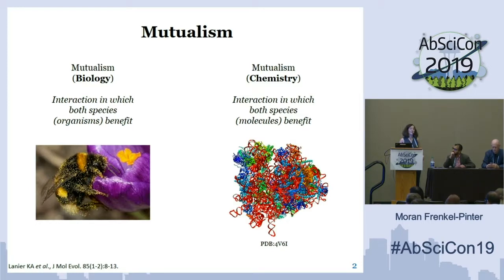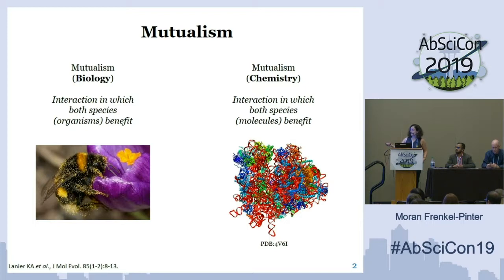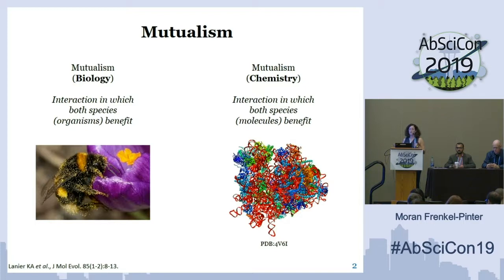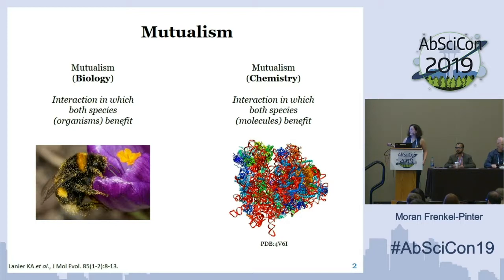First, let's start with a quick definition of what we mean by mutualism. I'm sure all of you are familiar with the definition of mutualism in biology, in which we have interactions in which both species benefit at the level of the organisms. For instance, the bee pollinates the flower, and the flower supplies food for the bee. It's the same thing when we talk about chemical mutualism, in which we have interactions between species in the form of molecules, in which both types of polymers benefit. Here we see the most complex molecular machinery that we know today, the ribosome, which is composed of both RNA and proteins. We know that RNA makes proteins and proteins make RNA, and we think that these types of interactions between different types of polymers were really important very early on in chemical evolution.